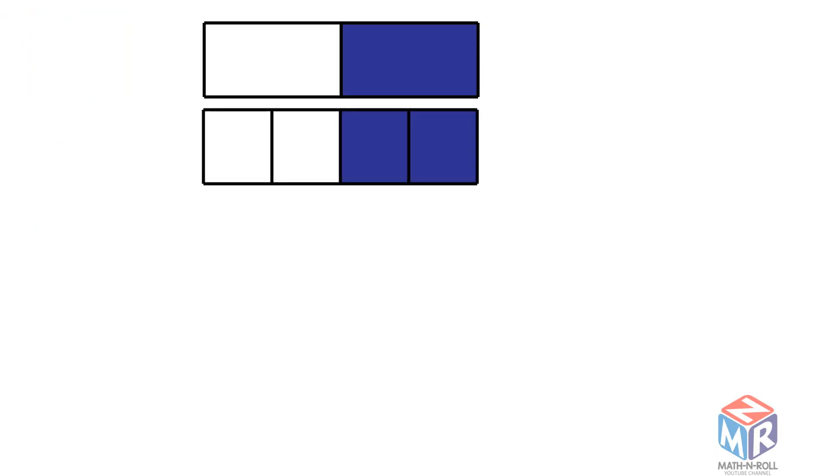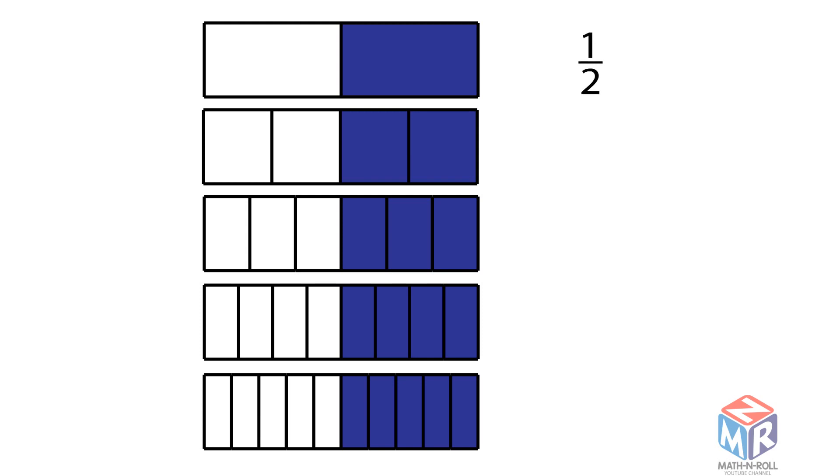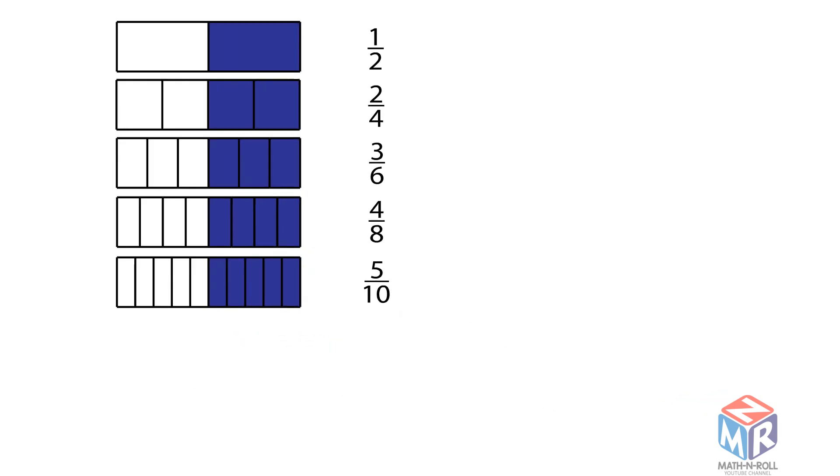Let's look at it in strips. 1 half, 2 fourths, 3 sixths, 4 eighths, and 5 tenths. All of these are equivalent to one another.